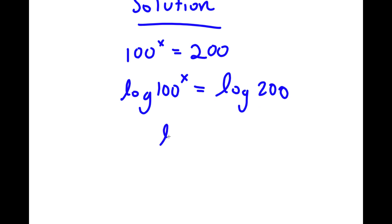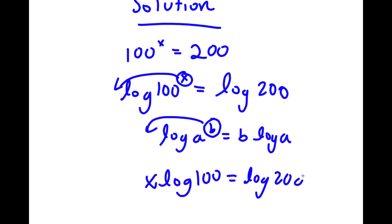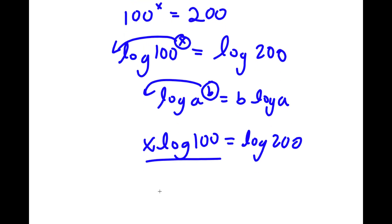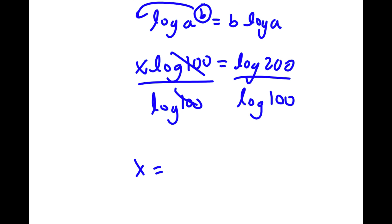I'm going to take the log on both sides, so I have log of 100 to the power of x is equal to log 200. Now if I have something in the form log a to the power of b, I can move b to the front, so this equals b times log a. In this case, I can move x to the front, so now I have x times log 100 is equal to log 200.